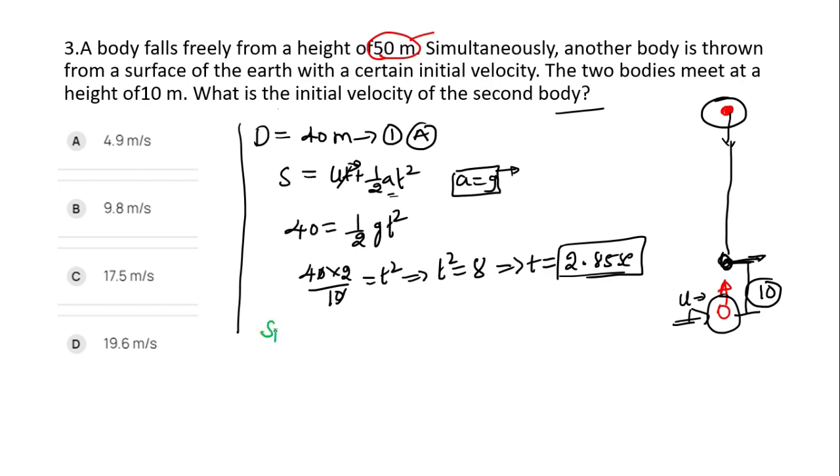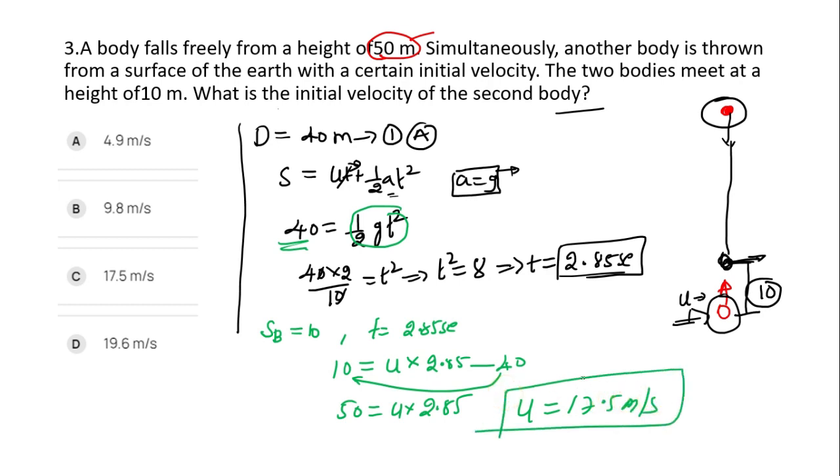Displacement of second body is equals to 10 meters, and t equals 2.85 seconds. So 10 equals u times 2.85 minus half gt square. The value of half gt square is 40. If I substitute here and take this to the other side, 50 equals u times 2.85. So u equals 17.5 meters per second. So that is clear.